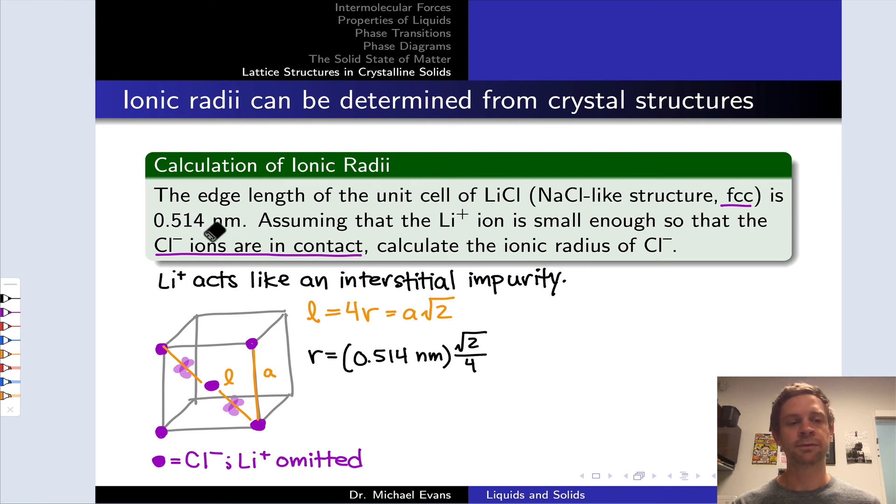From this, knowing the edge length, 0.514 nanometers, and this relationship we can calculate the ionic radius of chloride, and that is 0.182 nanometers or 182 picometers. And that's it.